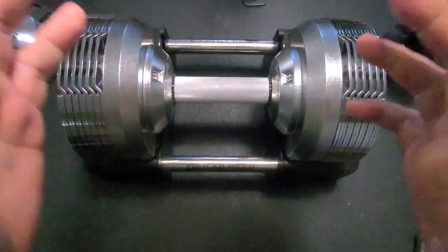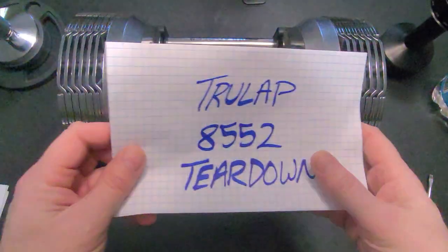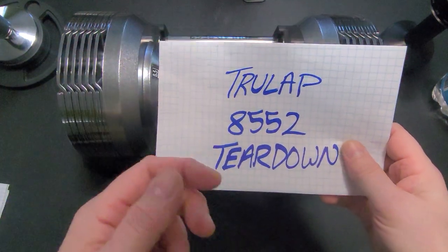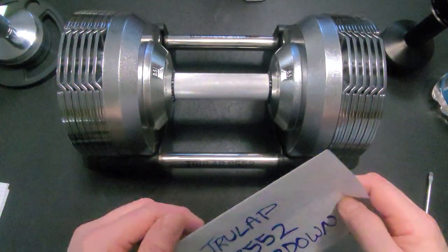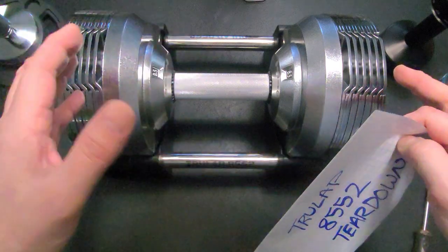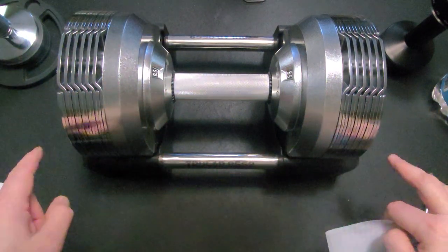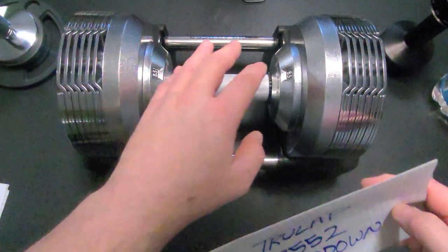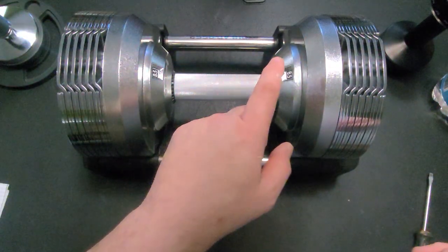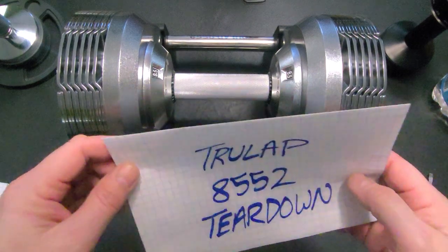Hey guys, Average Joe here and I am back with the very long-awaited Trulap Dumbbell Teardown. This is an 8-5-5-2. There is an 8-5-9-2, a larger version with more plates and a longer base. But they are basically the same dumbbell and share the same internals.